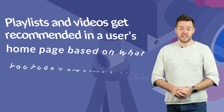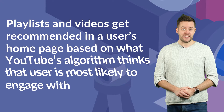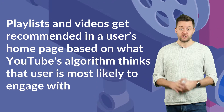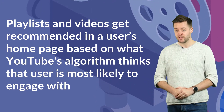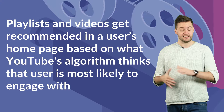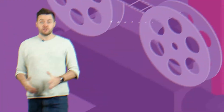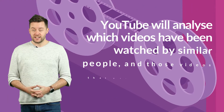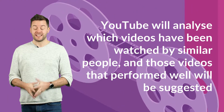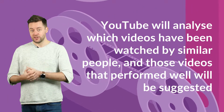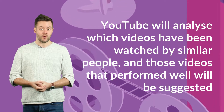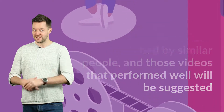Playlists and videos get recommended on a user's homepage based on what YouTube's algorithm thinks that user is most likely to engage with. YouTube will analyse which videos have been watched by similar people, and those videos that performed well will be suggested.